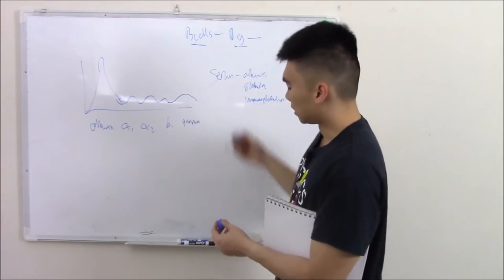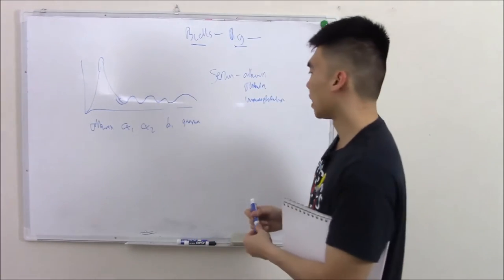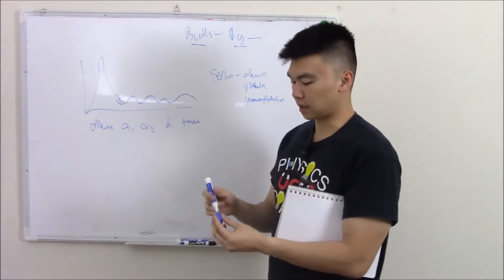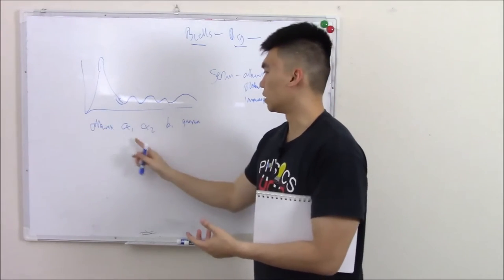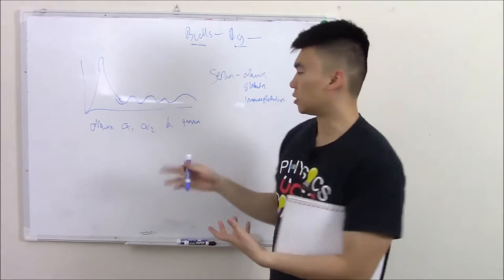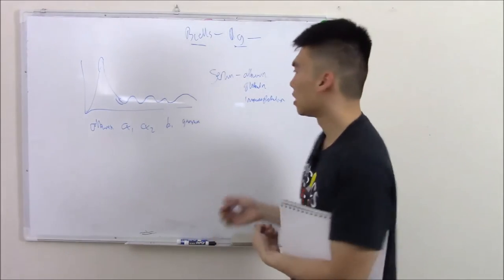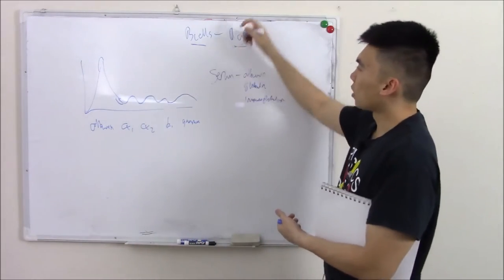And then gamma is going to be your immunoglobulins. And just a disclaimer, immunoglobulins can show up in alpha and betas also, but in order to show up in gamma. All right. So let's go back to what we're talking about.